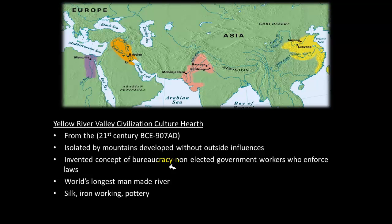The Yellow River Valley Culture Hearth is responsible for inventing bureaucracy — the system where non-elected officials carry out the will of the government, similar to how people help elected mayors run a city. They also began work on the Grand Canal, the world's longest man-made waterway. Additionally, the Yellow River Valley Culture Hearth is credited with developing silk, iron working, and pottery.